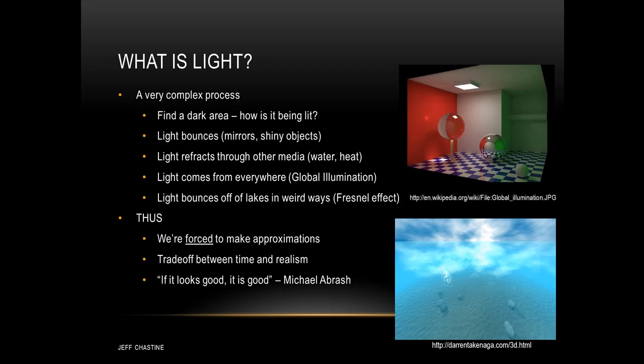Light has other properties that make it even more complex, such as the effect that you get looking across a lake, and this is called the Fresnel effect. You can see an example of that in the lower right image, where you can see objects that are below you better than those that you can see further away. So because there's no way to accurately replicate real world light, we're forced to make approximations, and therefore there's a tradeoff between time and realism. But all of this is okay because in computer graphics, if it looks good, it is good.